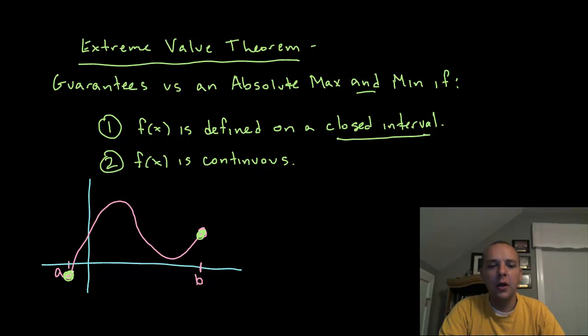If I draw from point A to point B without picking my pencil up, then it will achieve a consistent set of Y values along the way. It will go up and down and back up or do whatever it's going to do, but without any jumps, holes, or asymptotes, it's pretty clear there will be a highest Y value and a lowest Y value.